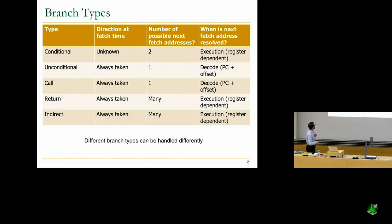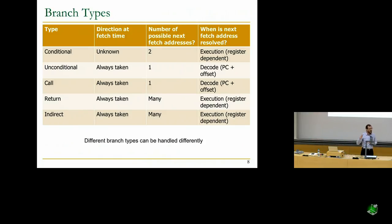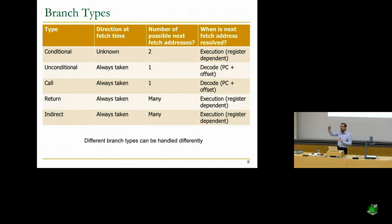There are a bunch of branch types. Conditional ones — direction is unknown. Should you take the branch or not? There are two possible next fetch addresses, and the condition is determined when you execute the branch. In Pentium 4, the branch direction was determined at least 20 cycles after you fetch the branch, sometimes more because of out-of-order execution. If the branch is dependent on a long-latency load, it could take hundreds of cycles.